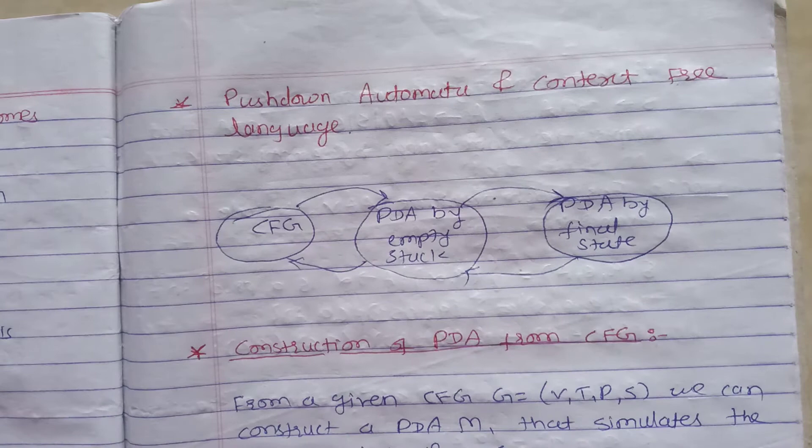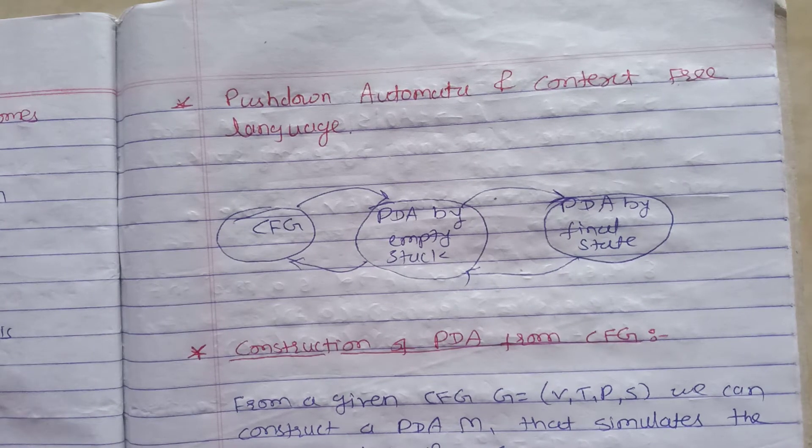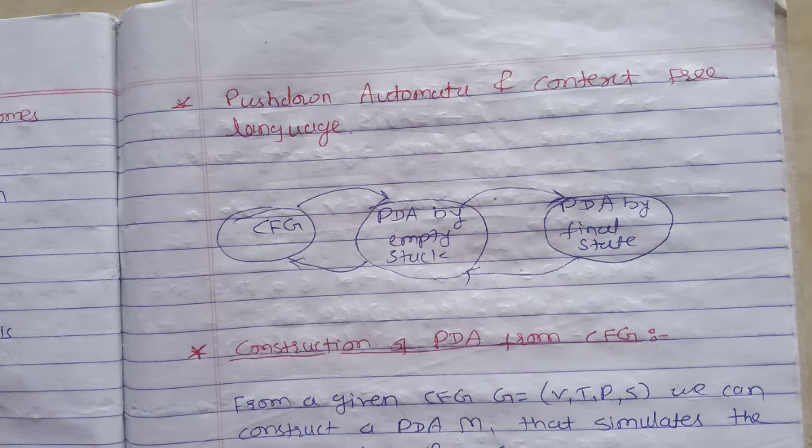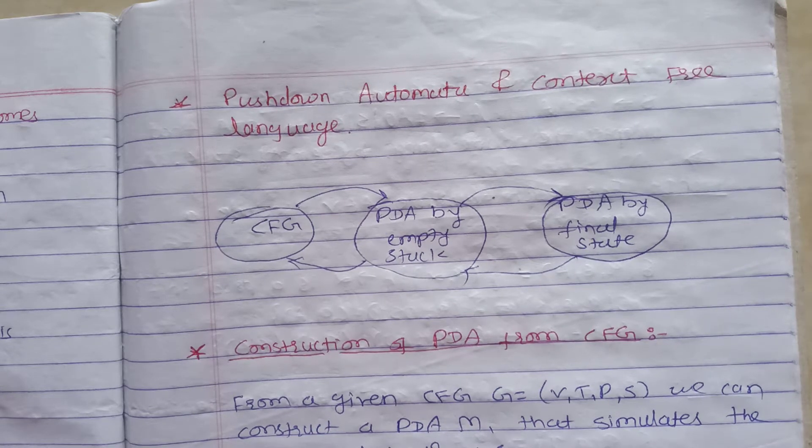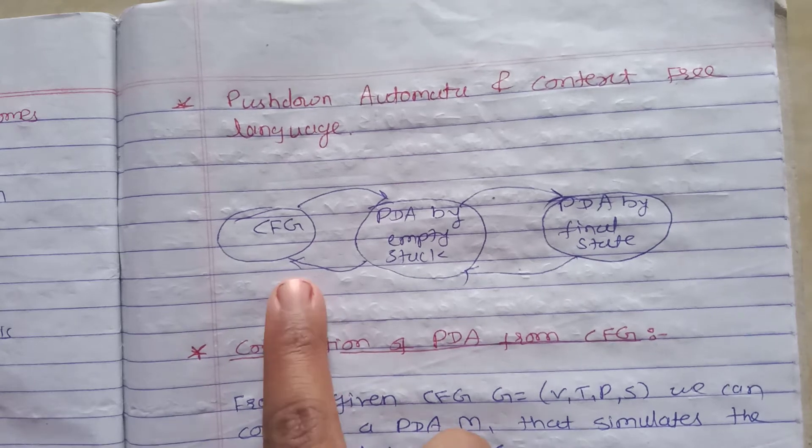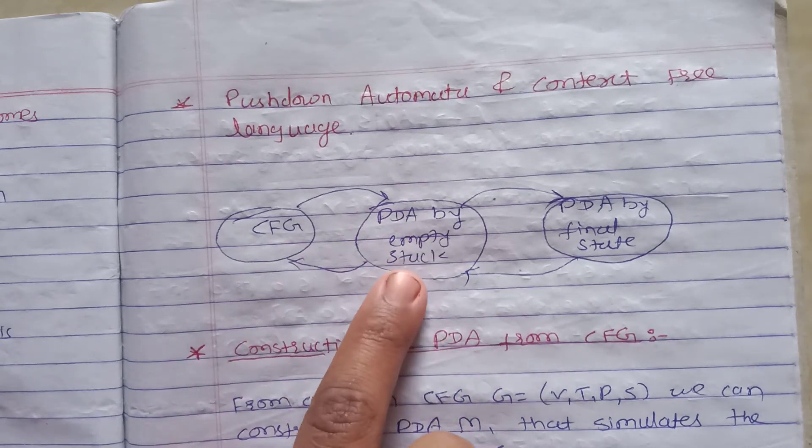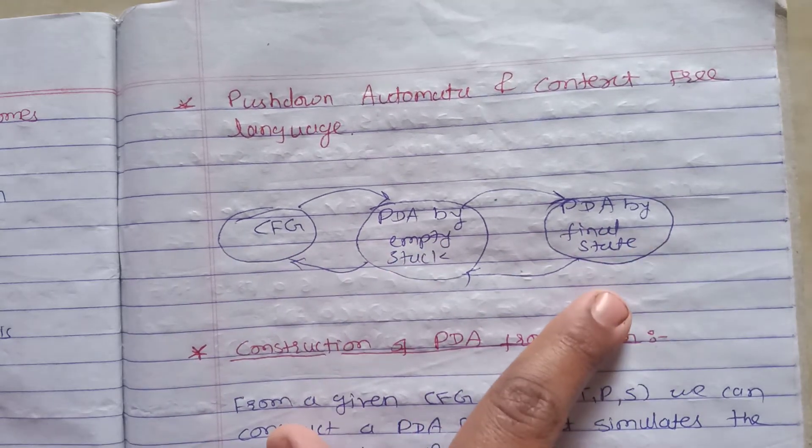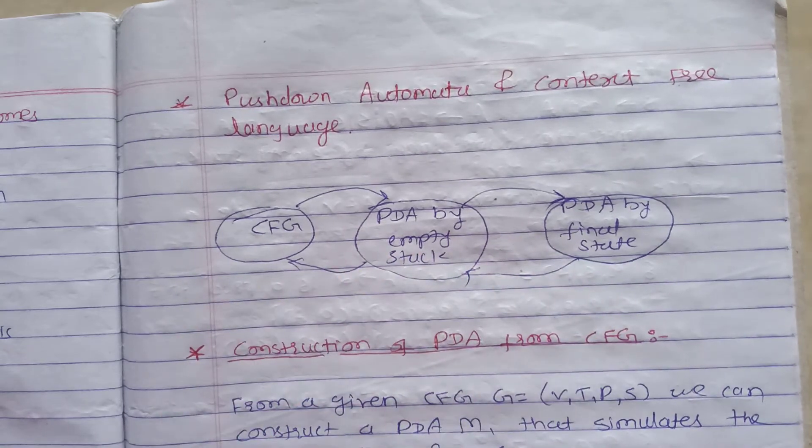In this lecture we are going to start with pushdown automata and context-free language. We can convert the context-free language into pushdown automata and pushdown automata to context-free language or context-free grammar. So context-free grammar, pushdown automata by empty stack and final stack - we can convert between these two.